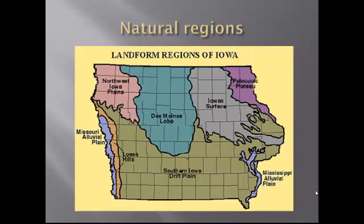The Iowan Surface was shaped by an earlier glacial period about 20,000 years ago. This area is hillier than the Des Moines Lobe, and it has all these different streams.